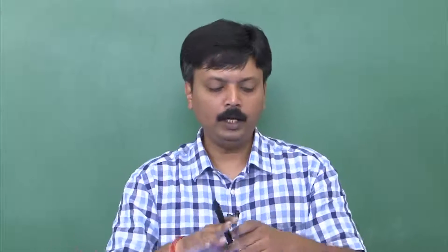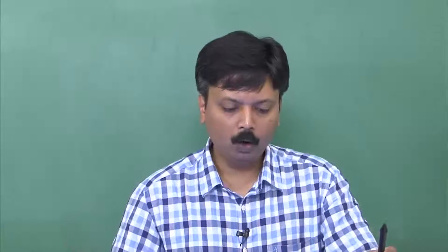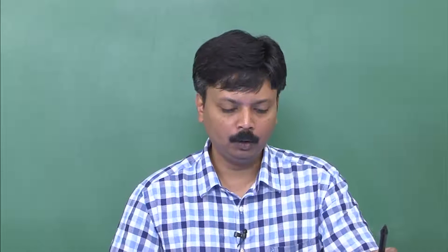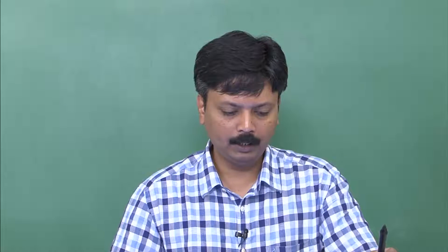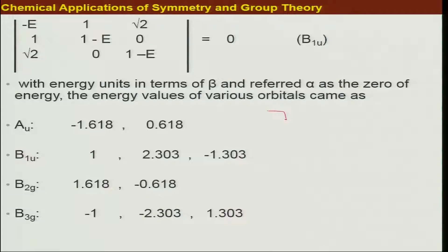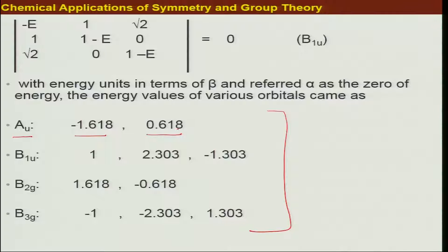Utilizing Hückel's approximation, we could find out all the energies of the 10 different SALCs. Ultimately we found the energies of the possible MOs. Two SALCs with the same AU symmetry have two different energies. Similarly for B1U, B2G, and B3G we found the corresponding energy levels.